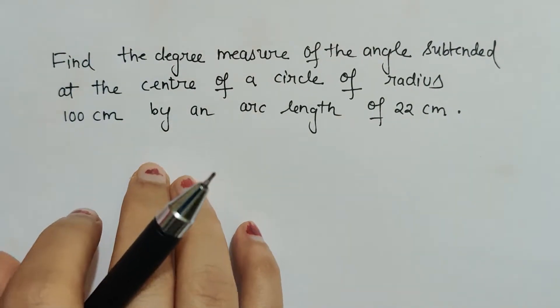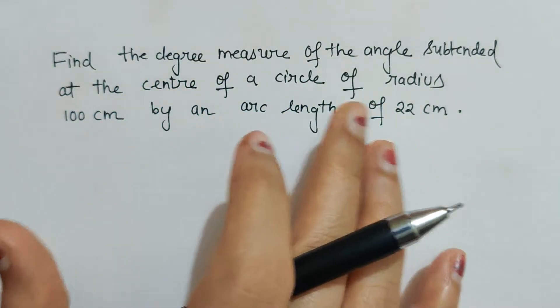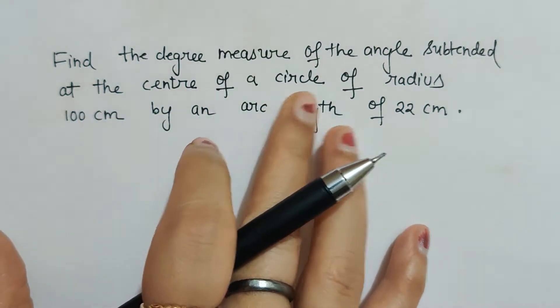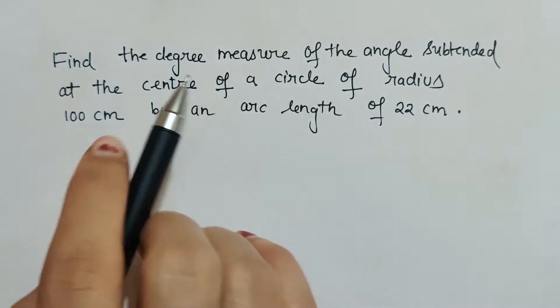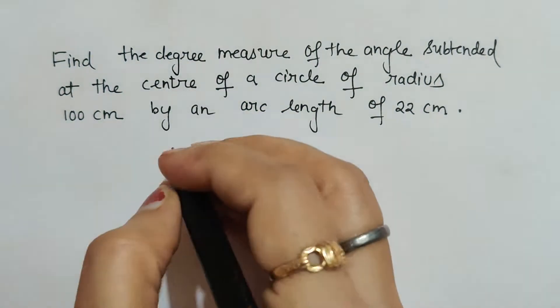Find the degree measure of the angle subtended at the center of a circle of radius 100 centimeters by an arc length of 22 centimeters. We have to find the degree, so obviously the formula that we will use...